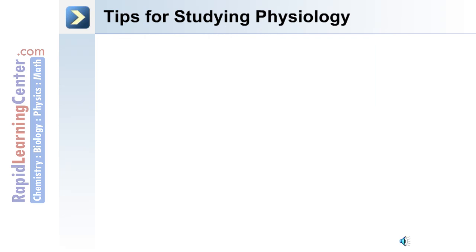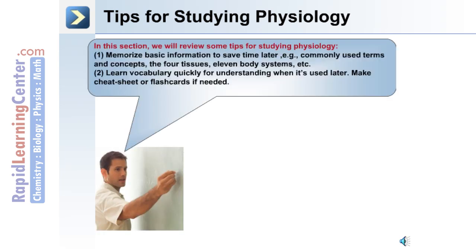Here are some tips for studying physiology. Number one: memorize basic information to save time later — for example, commonly used terms and concepts, the four tissues, or the eleven body systems. Number two: learn vocabulary quickly for understanding when it's used later. Make a cheat sheet or flash cards if needed.